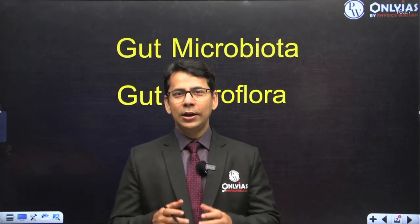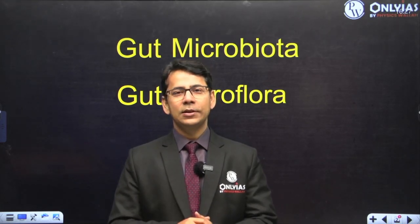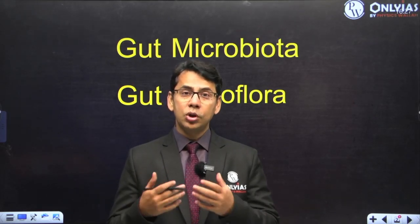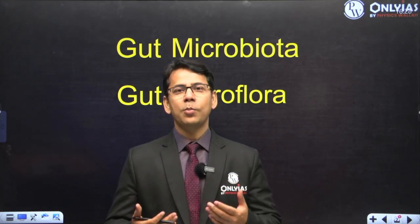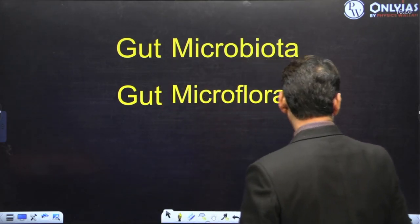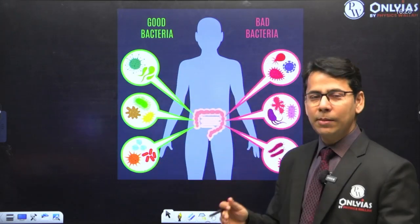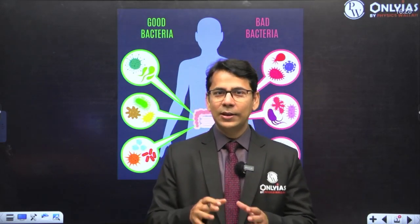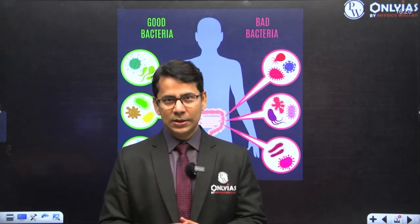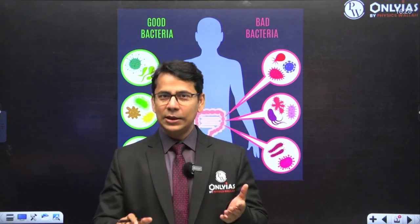In our intestine, there are a large number of microorganisms living inside. These are bacteria, there may be fungi, and you will be amazed to know that their numbers are so huge that they can outnumber the number of cells we have in our body. This gut microbiota or microflora can be of two types — good bacteria and bad bacteria. Obviously, we have to increase the good bacteria and decrease the bad bacteria.